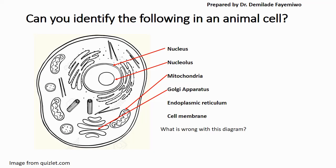The golgi apparatus is the organelle over there. The golgi apparatus is usually confused with the endoplasmic reticulum simply because many people believe that they look alike. To identify these two correctly, notice that the endoplasmic reticulum seems to have continuous folds within it, whereas the golgi apparatus is just individual layers of similar-looking strands.